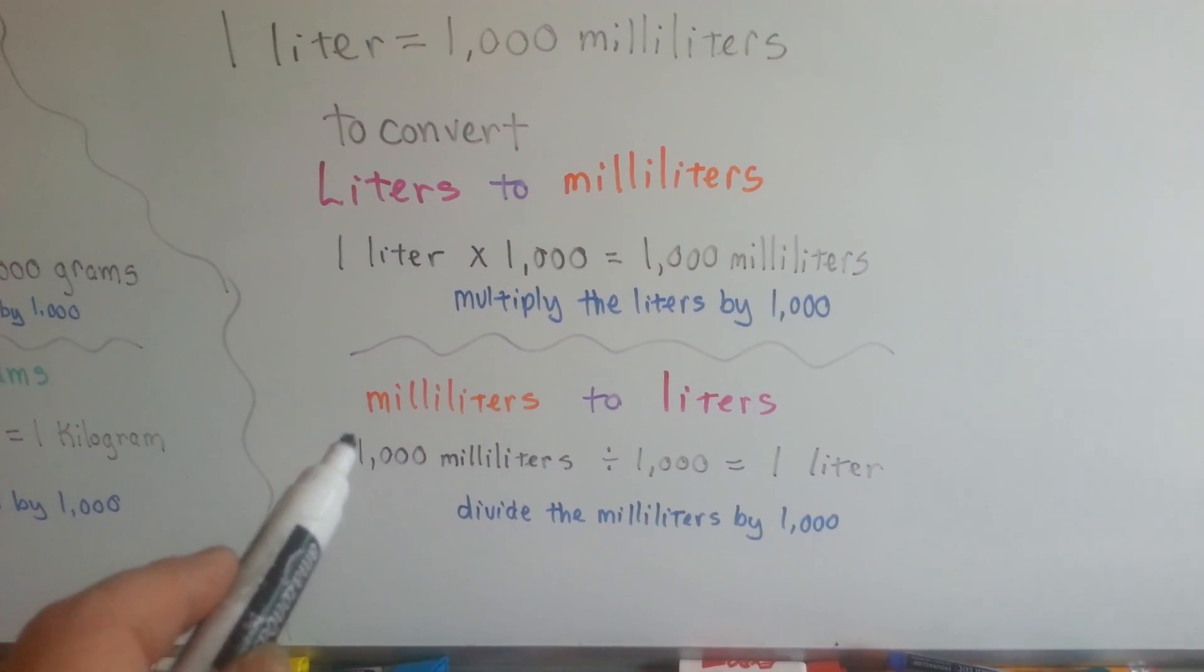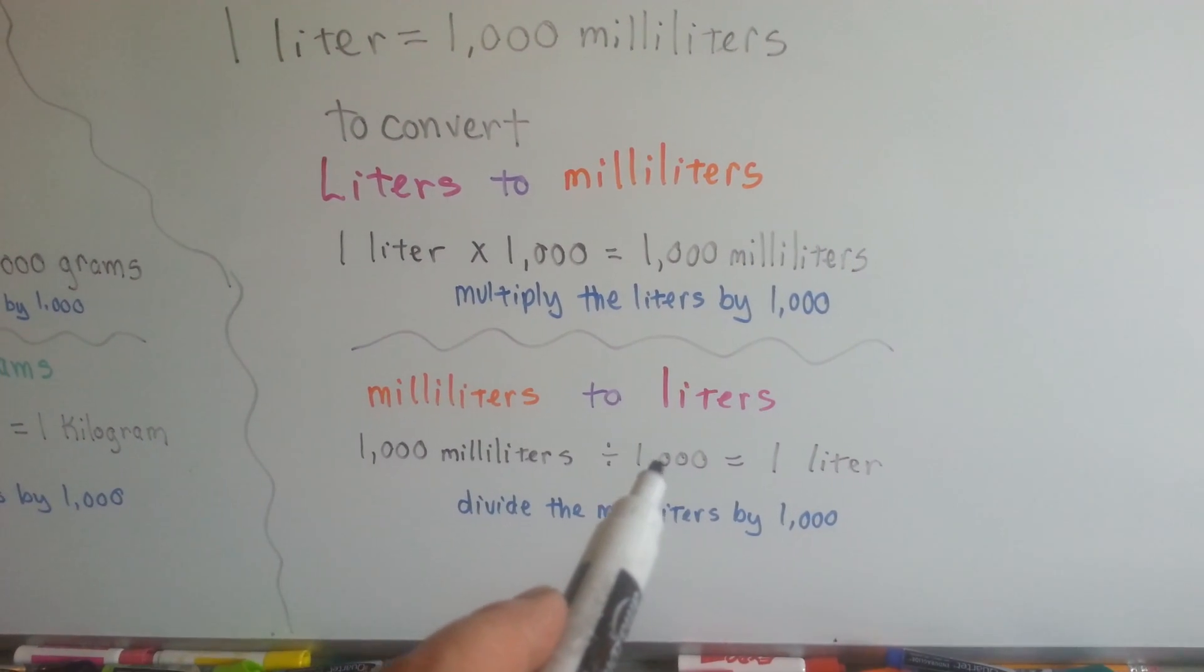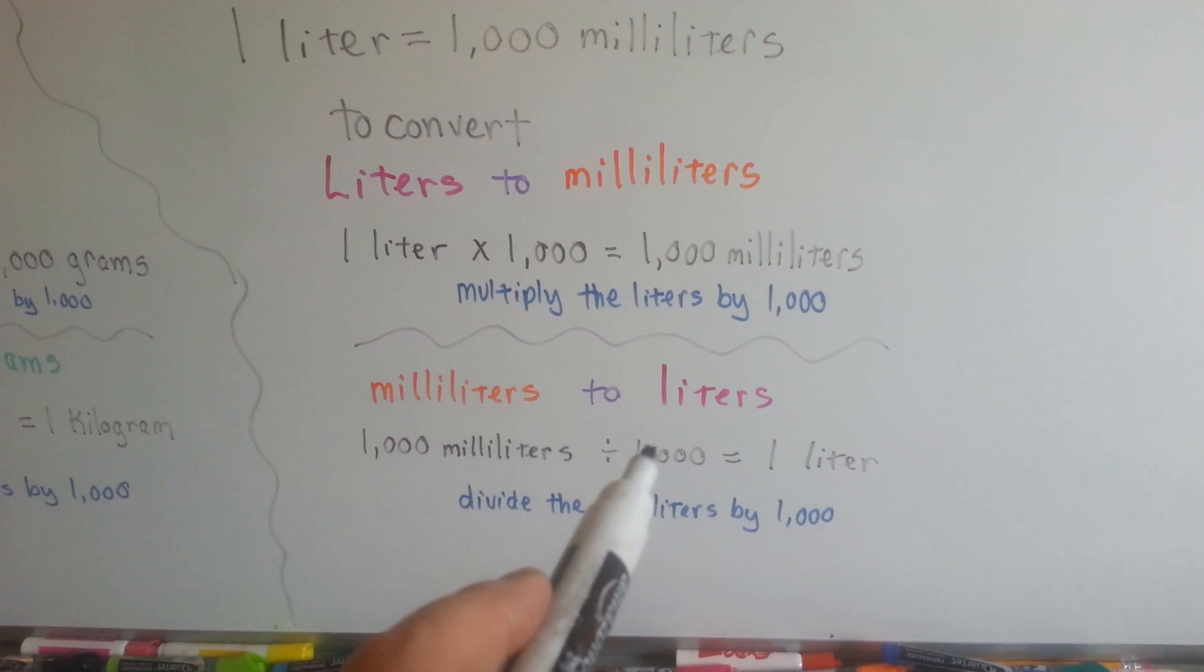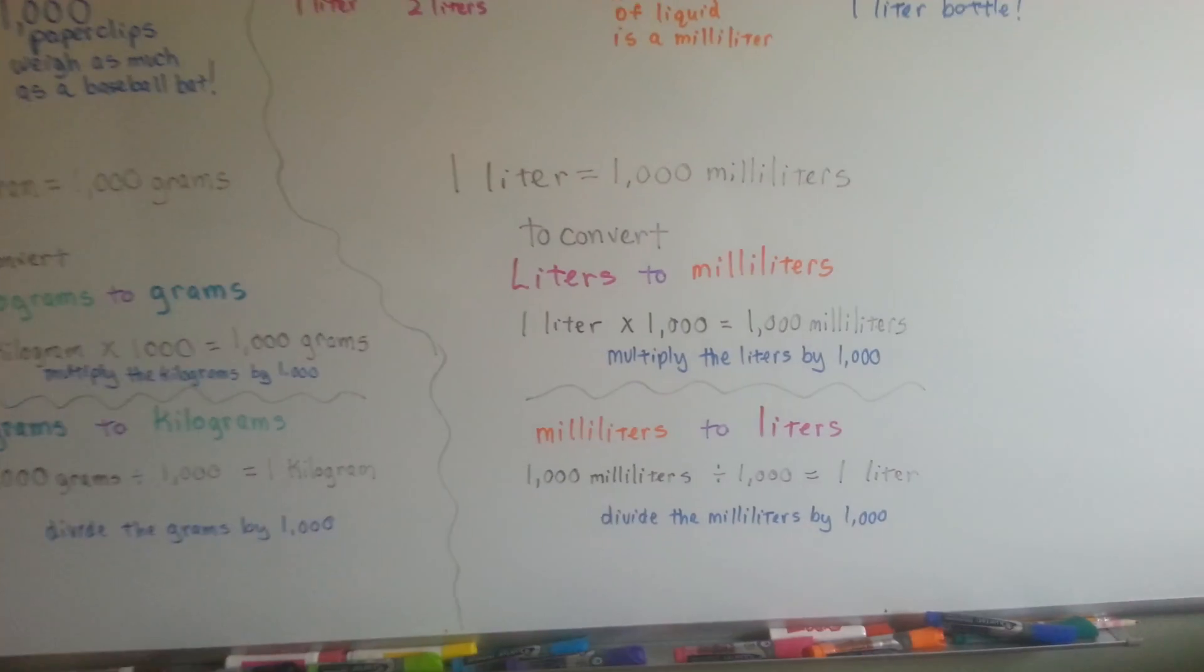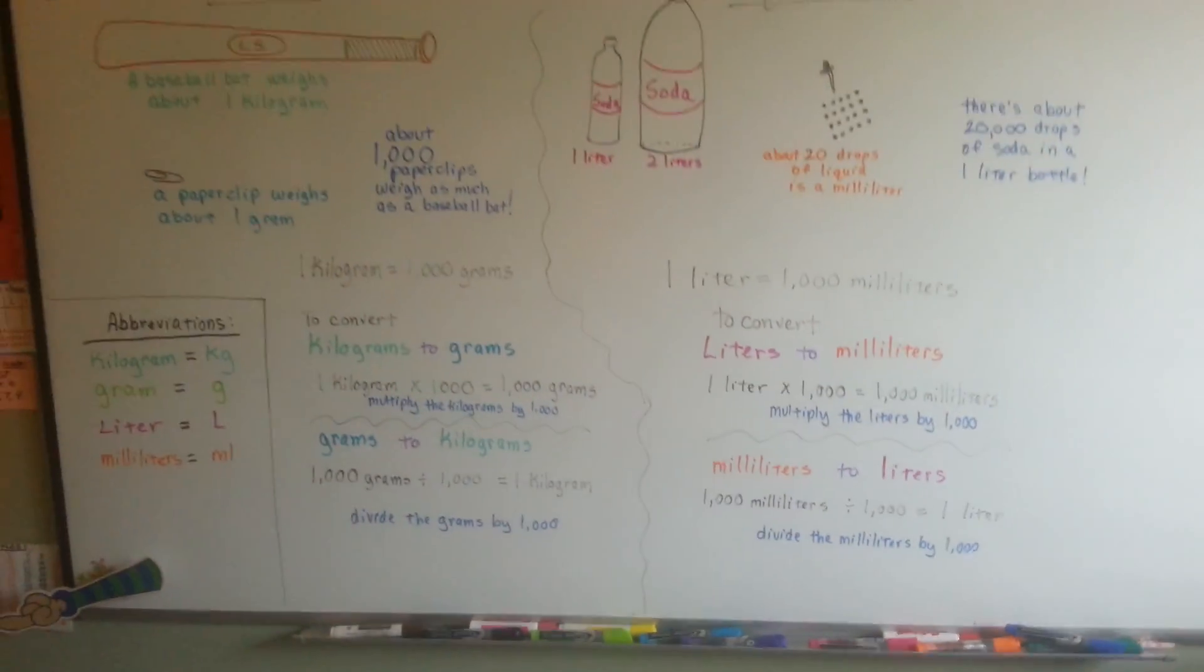So if we had four thousand milliliters, we divide it by a thousand because that's how many milliliters are in each liter. And we would get four liters. See? So multiplying or dividing by a thousand will help you convert them back and forth.